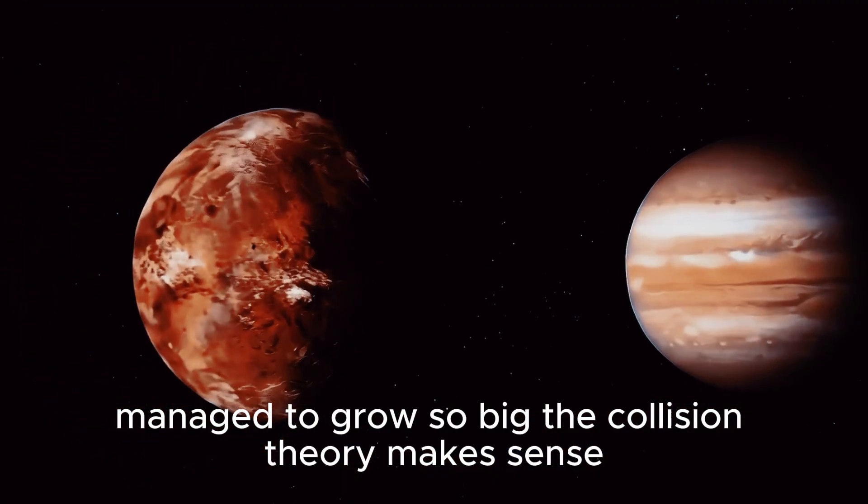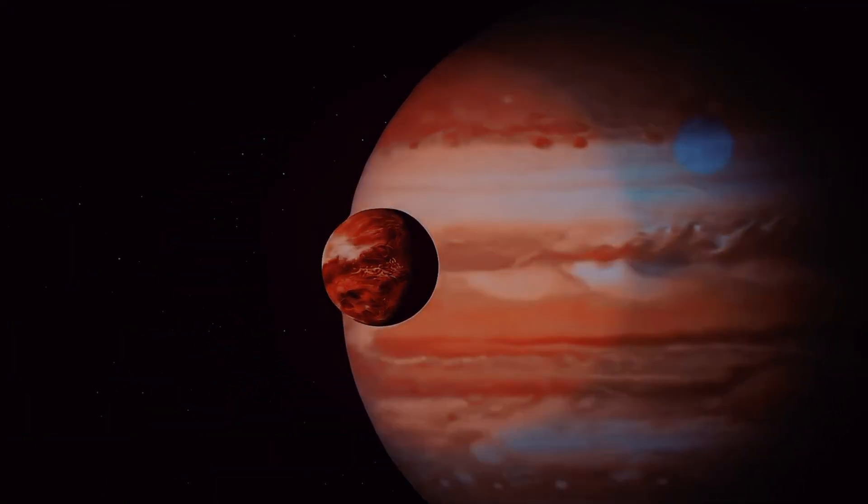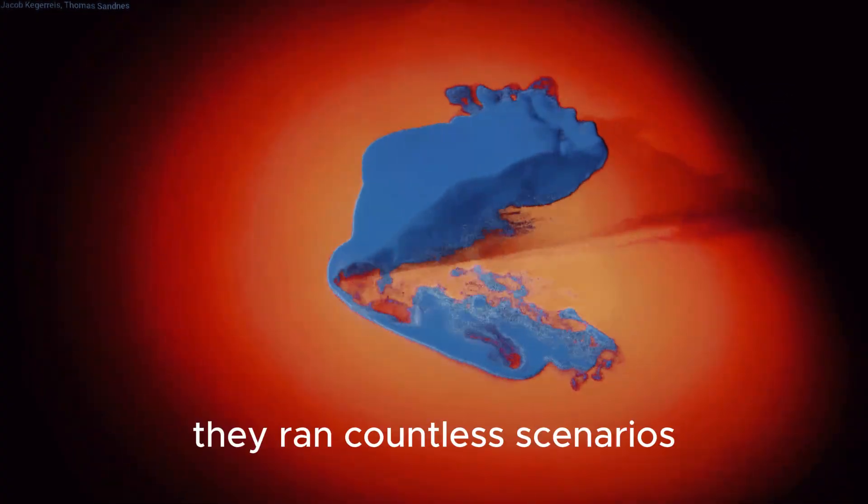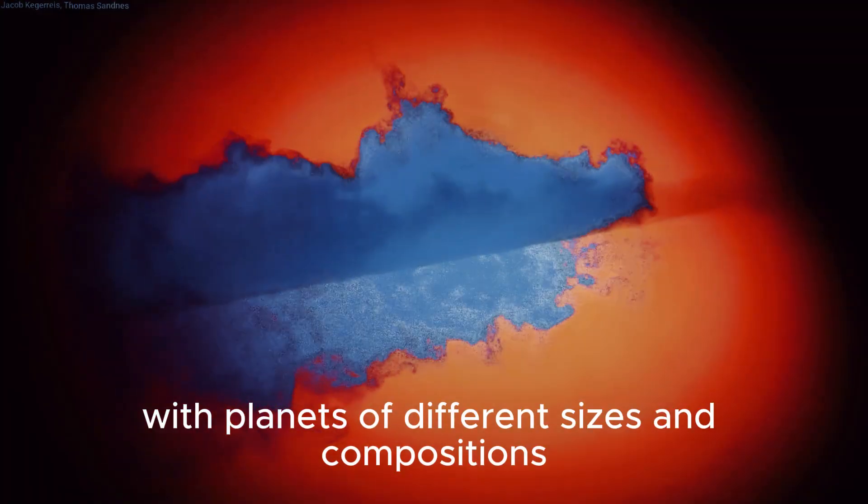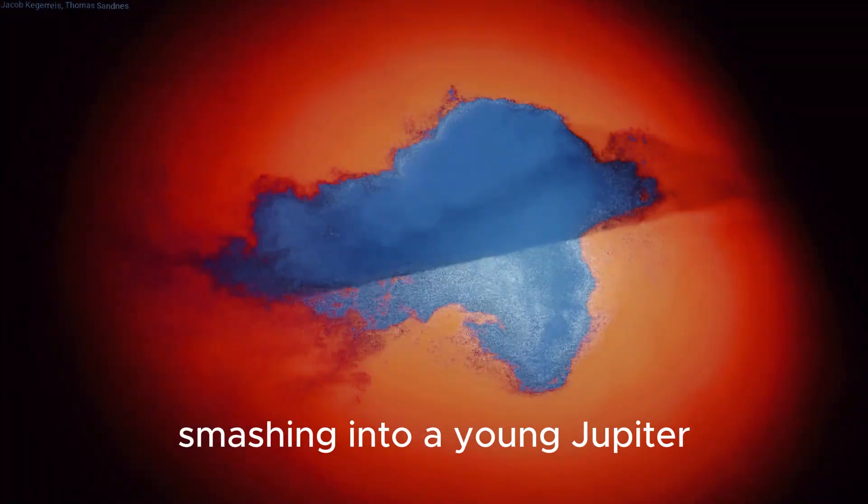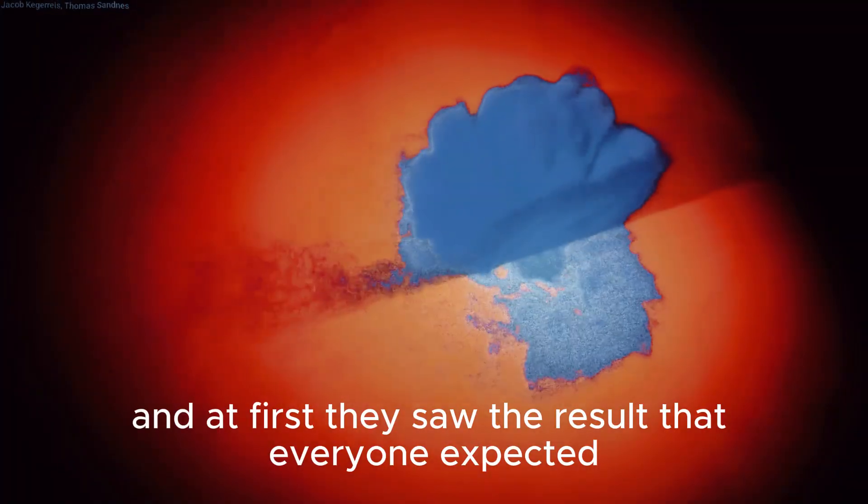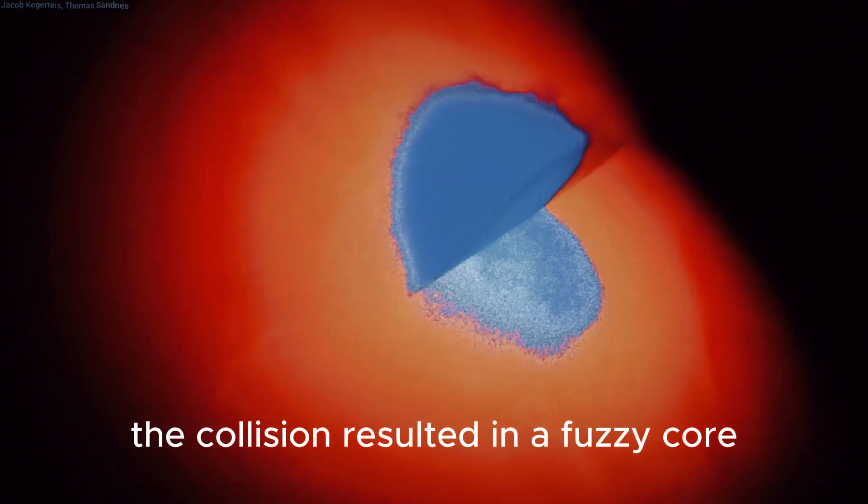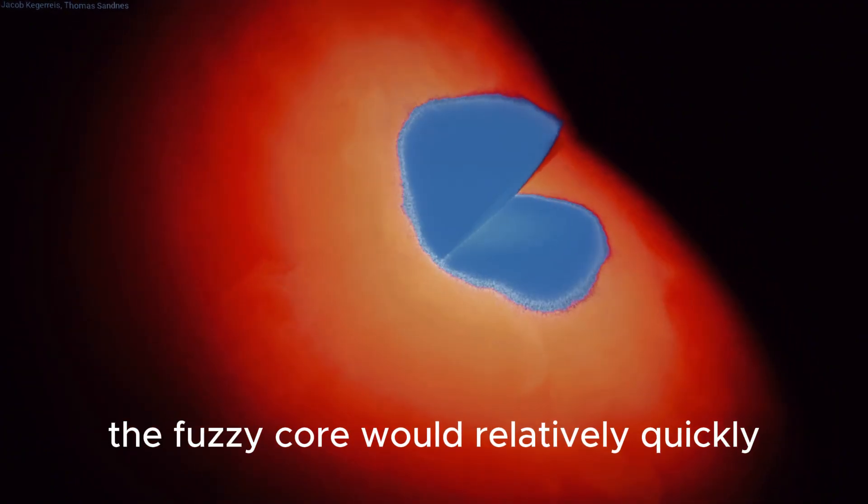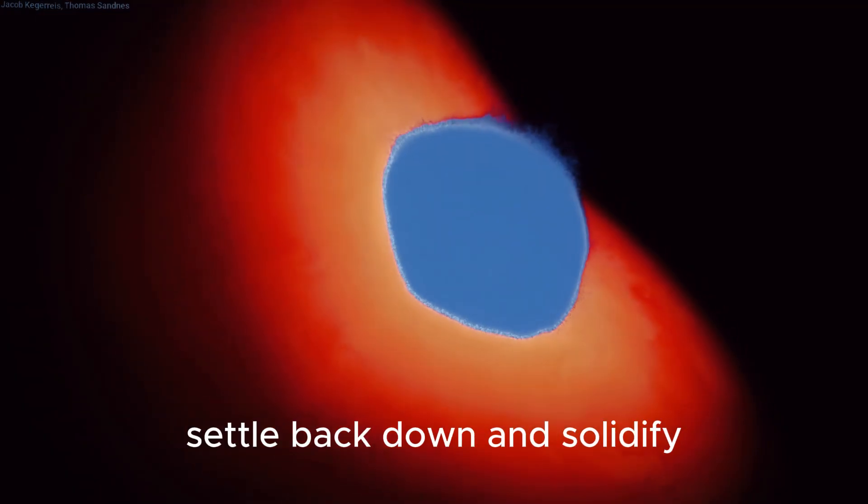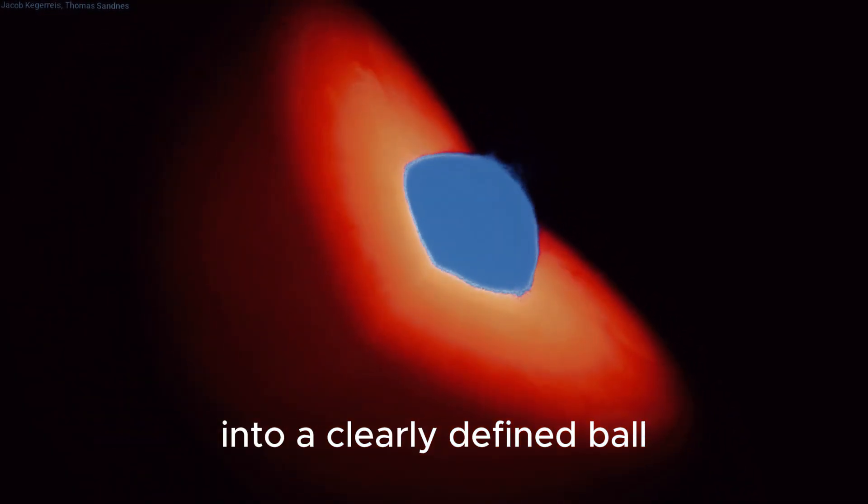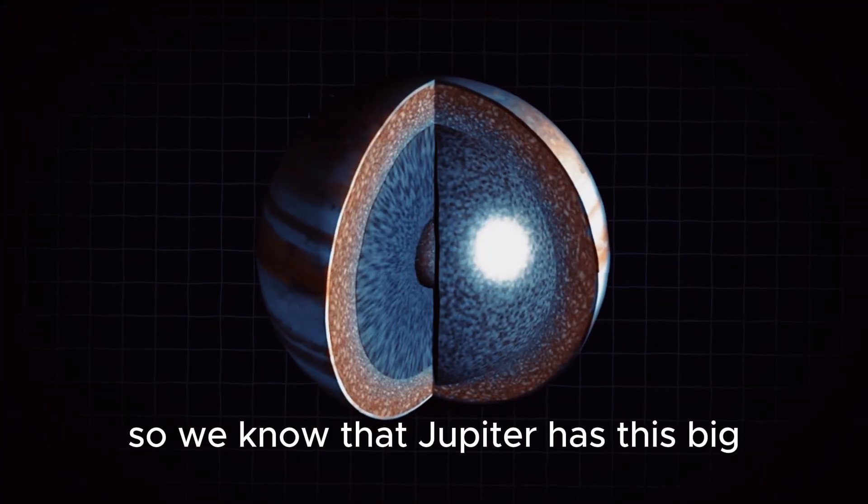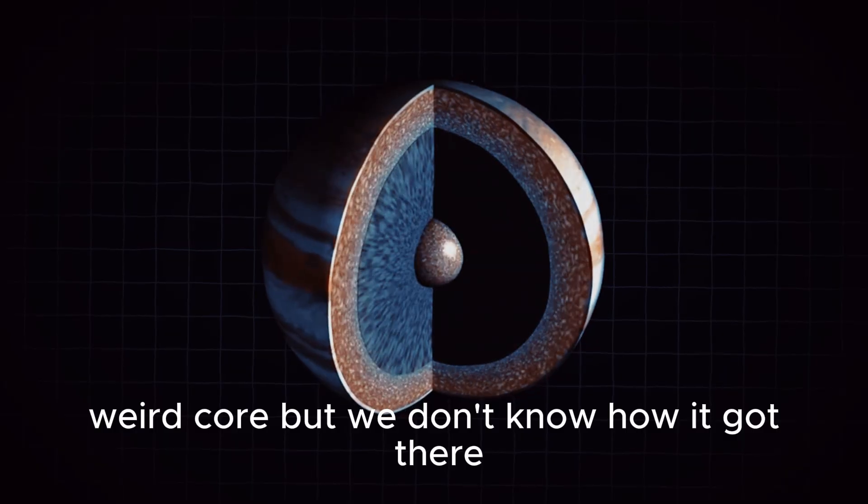The collision theory makes sense, but that doesn't necessarily mean that it's true. Recently, astronomers decided to try and recreate this event with a computer simulation. They ran countless scenarios with planets of different sizes and compositions smashing into a young Jupiter. And at first, they saw the result that everyone expected. The collision resulted in a fuzzy core. But in every simulation they ran, the fuzzy core would relatively quickly settle back down and solidify into a clearly defined ball at the center of the planet. So we know that Jupiter has this big, weird core, but we don't know how it got there.